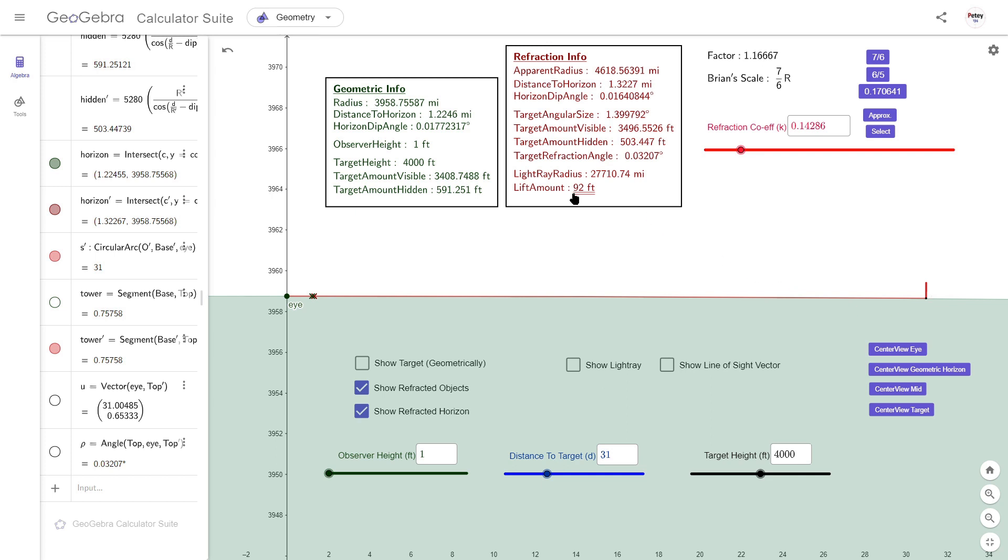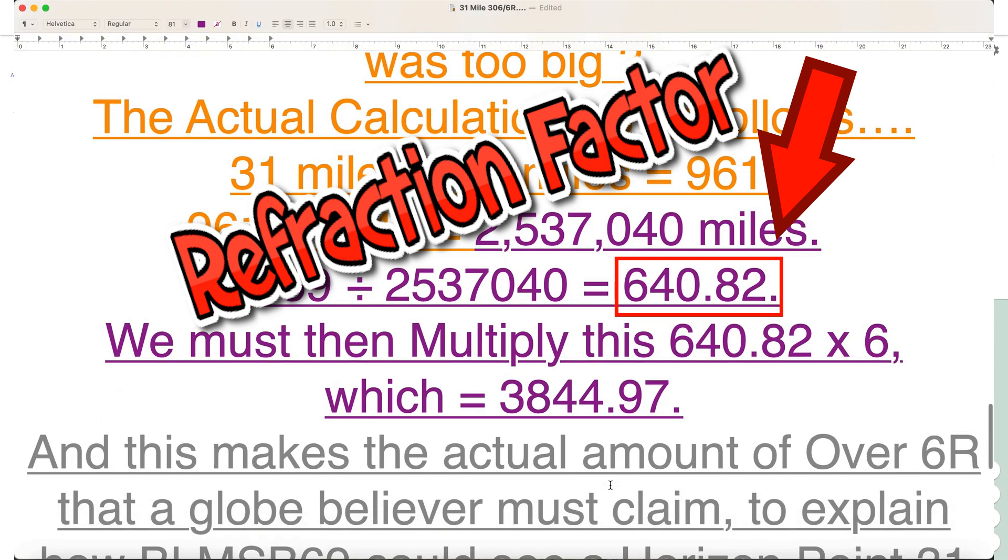It seems to be lifted 92 feet. But notice for this refraction factor 7 over 6, we have over 500 feet of hidden height.